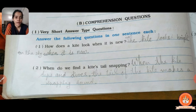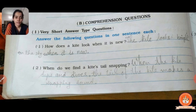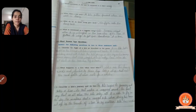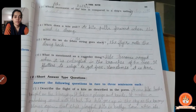Second short answer: when do we find a kite's tail snapping? 'Snapping' means it is making a sound. When the kite dips and dives, the tail of the kite makes a snapping sound. The poet is saying that when the kite dips and dives, the tail makes a kind of snapping sound when you fly the kite in the sky.